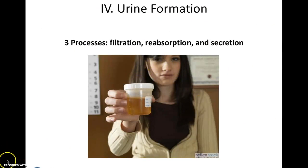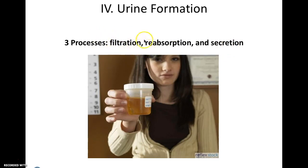Now we'll get into urine formation. In the nephron, there are three processes before urine can be formed: filtration, reabsorption, and secretion. It starts by filtering passively, then reabsorbing things back into the blood to ensure it contains the nutrients the body needs. Secretion at the end is the last-ditch effort to get rid of toxins, hormones, drugs, and pills from the blood.